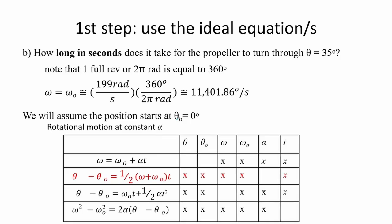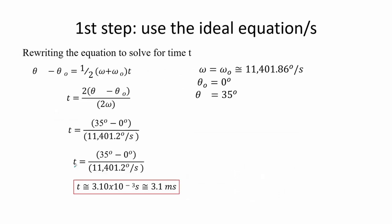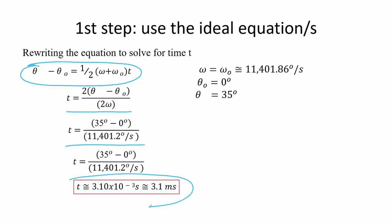For letter B, we convert the angular velocity to degrees per second, then choose one of the equations of motion for rotating objects at constant alpha. Equation 2 fits nicely. We rewrite equation 2 to get an expression for time t, then substitute the values, finding that the time needed to reach the position of 35 degrees is approximately 3.10 times 10 to the power of negative 3 seconds, or about 3 milliseconds.